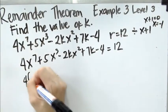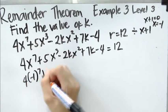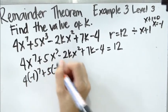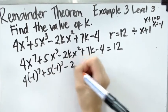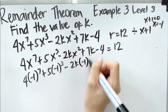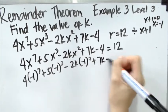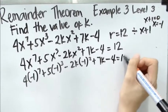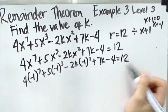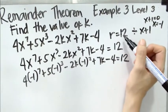So we have 4 times negative 1 to the 7 plus 5 times negative 1 to the 3rd minus 2k negative 1 squared plus 7k minus 4 equals 12. Remember, 12 came from the given problem.